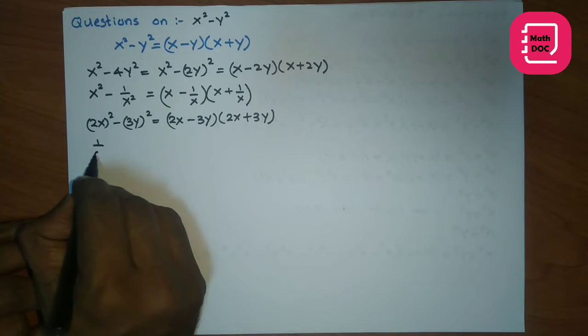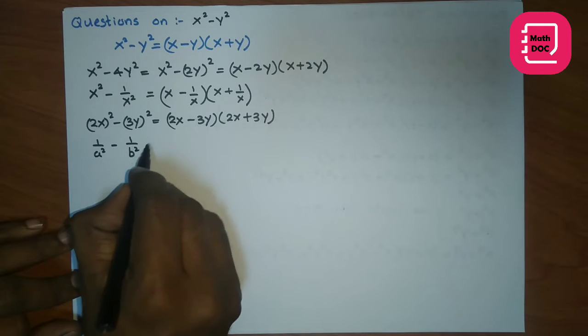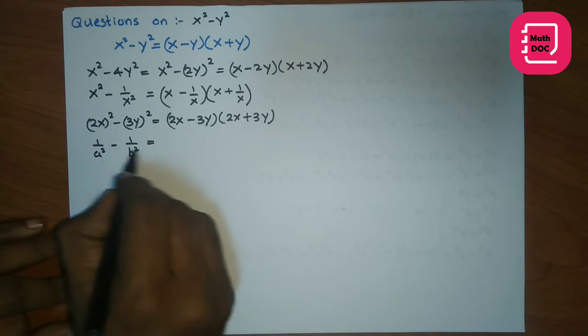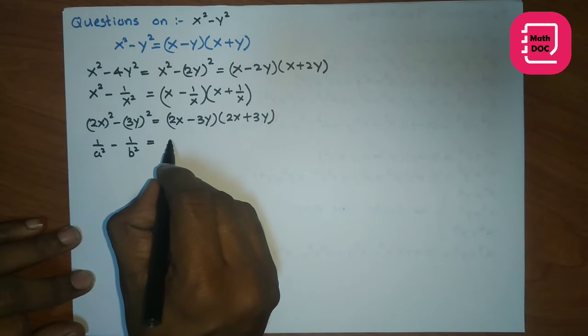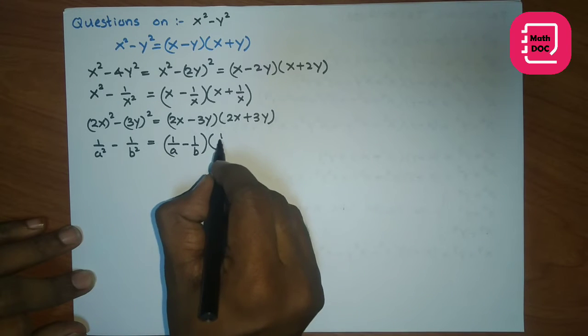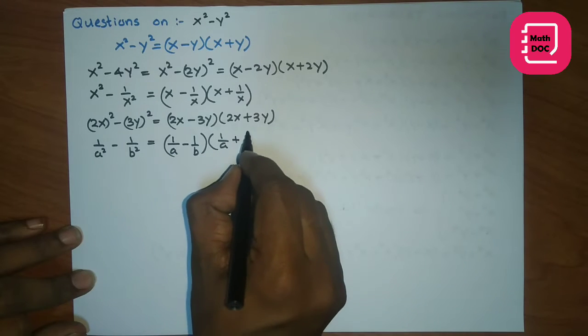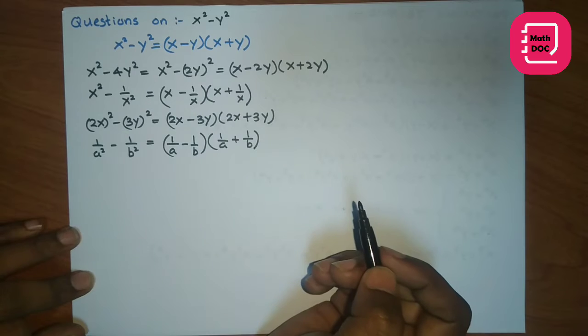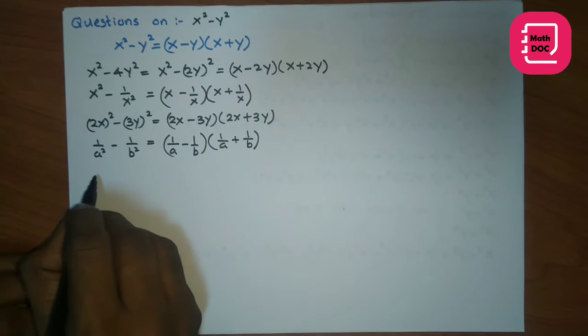Then 1 over a-squared minus 1 over b-squared. Again we see a difference of two squares pattern. Then here the factors are 1 over a minus 1 over b times 1 over a plus 1 over b. Let's take another one.